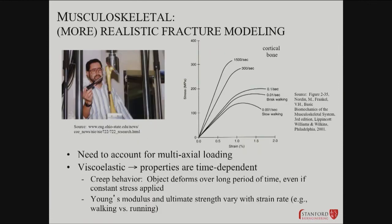Questions come up: how can we not use just a single number, and how can we account for multi-axial loading? The properties are also time-dependent. Some of this is remarkably dynamic, even within the course of a single exercise session. Stress-strain relationships can change in cortical bone depending on how fast someone is walking, presumably due to multi-axial loading and what else is pulling on a bone at the same time.